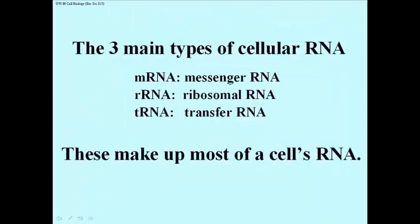There are three main kinds of cellular RNA: the messenger RNA, the ribosomal RNA, which is part of the ribosome structure and has enzymatic function independent of polypeptide structure, and then transfer RNA.